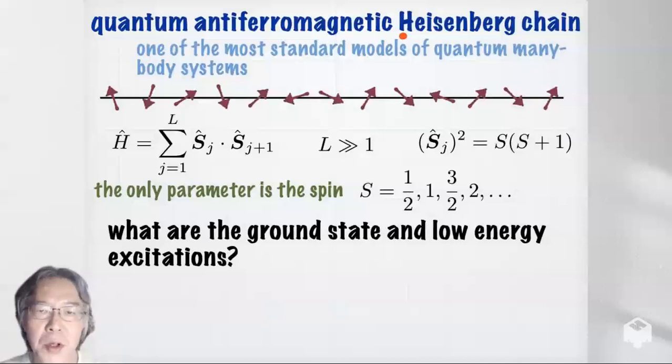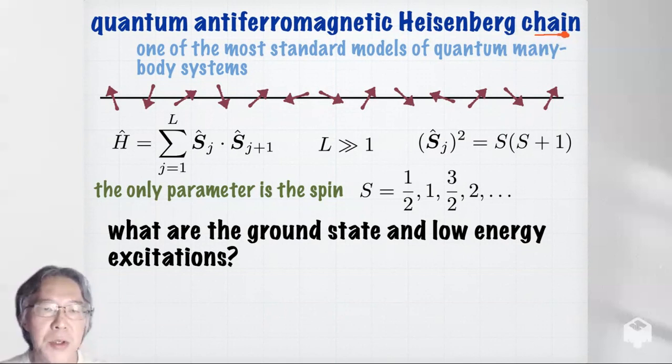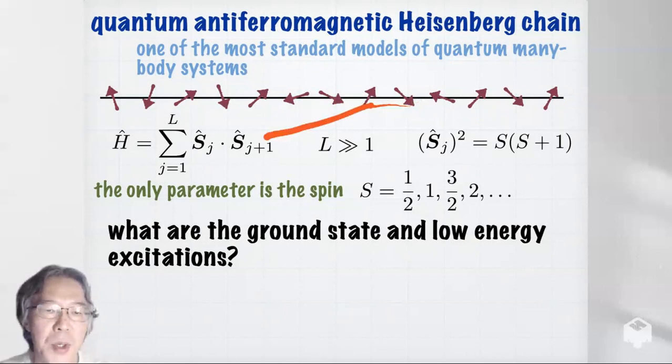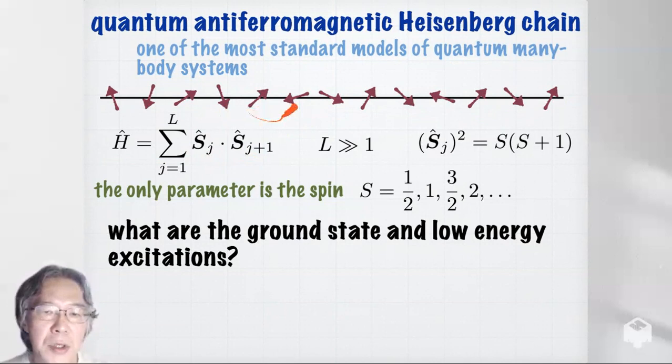Now I want to consider a quantum anti-ferromagnetic system. This is the model called the Heisenberg chain — a one-dimensional system, one of the most standard models of quantum many-body systems. On this chain, on each site you have a quantum spin described by the S_j operator. The Hamiltonian is the same anti-ferromagnetic form, summed over all nearest-neighbor pairs. L is the number of sites.